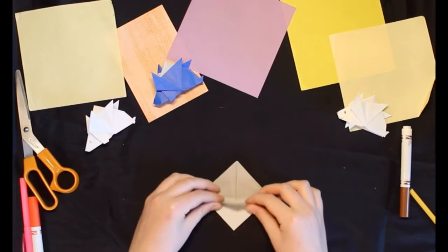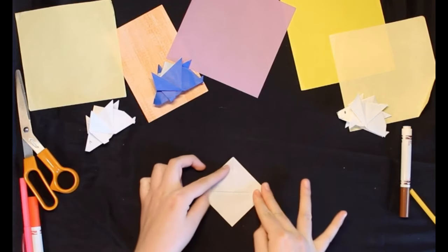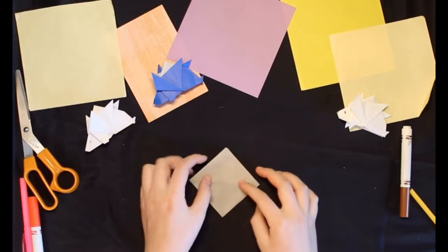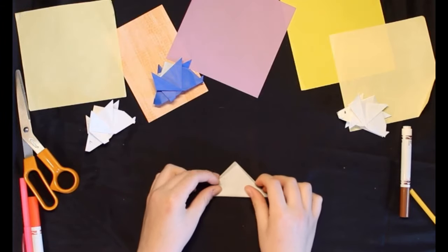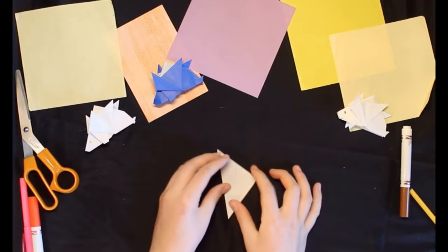Now, bring in the bottom point up to match with the top again. Make sure to crease that really good. Flipping it over. We're going to do the same thing on the other side and bring the bottom up to the top. Now, you've got a fun little triangle. And we're going to turn it sideways.